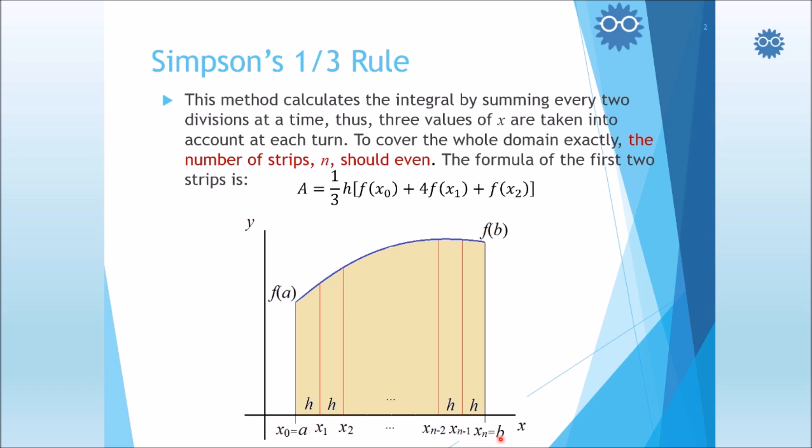The divisions are equal in width, which is named as h, or called the step size. The step sizes are all equal in order to make the computation easier.